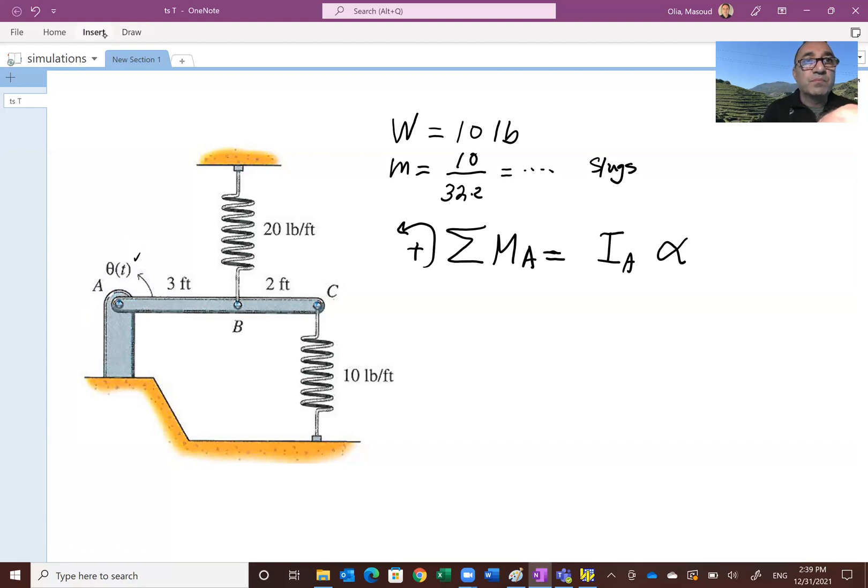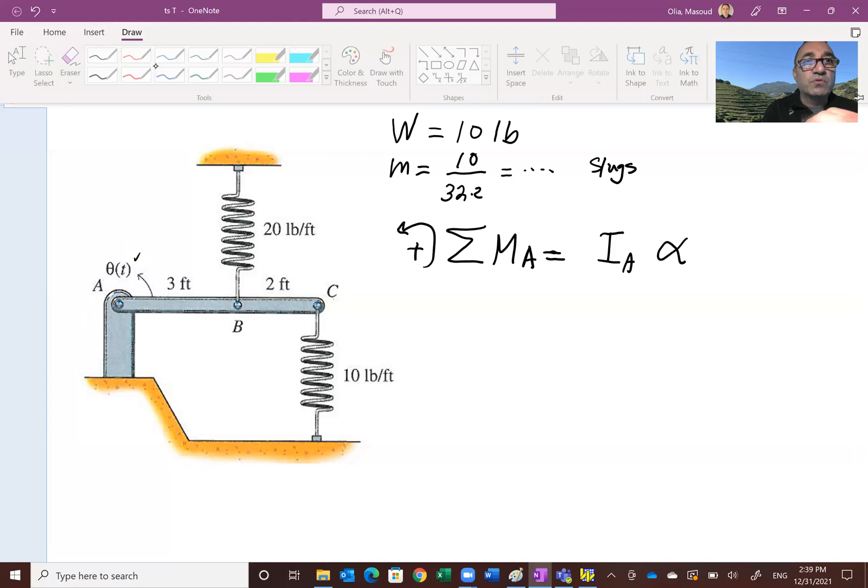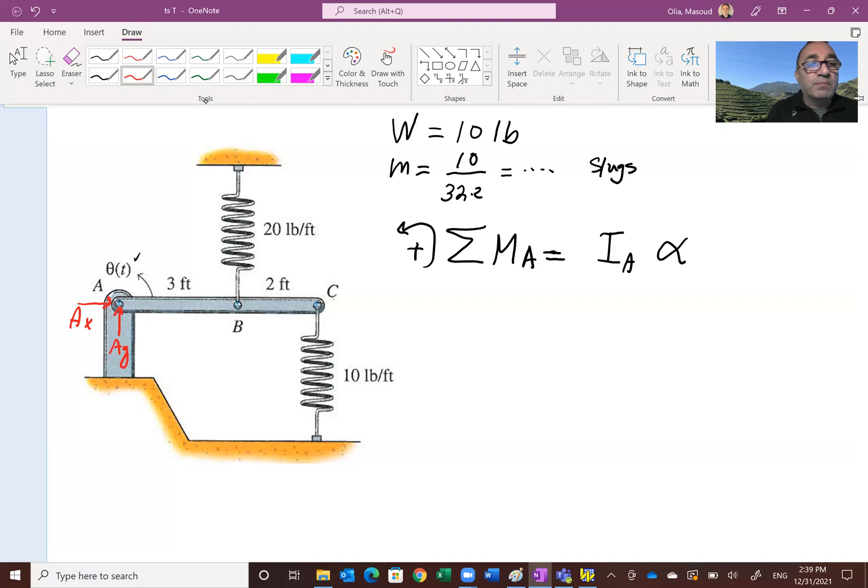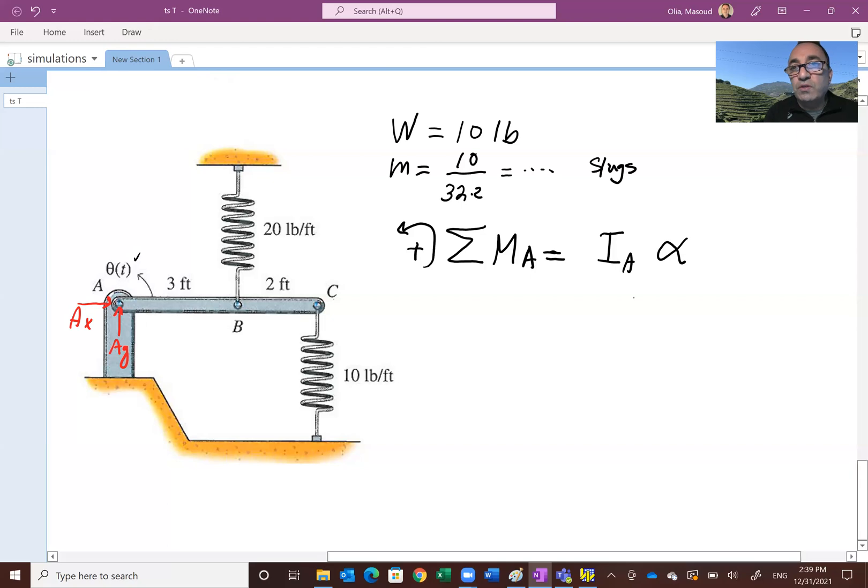Let's draw a free body diagram. At A, we have pin reactions A_x and A_y. Then we got the force of the spring at B and the force of the spring at C. If you look at how this will get deformed, if you call this angle a small angle theta, point B is going to move this much up and point C is going to move this much up.